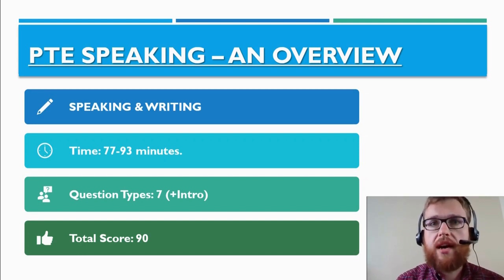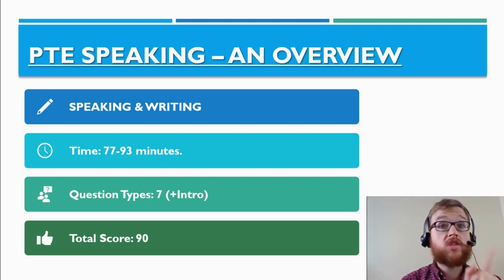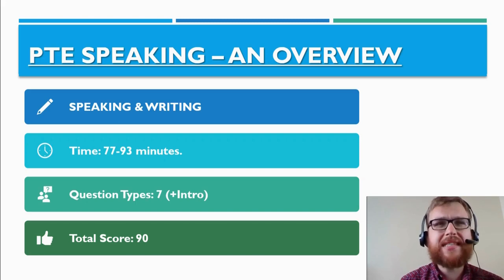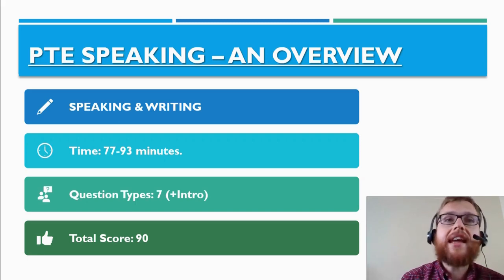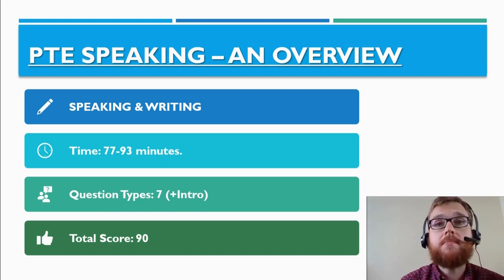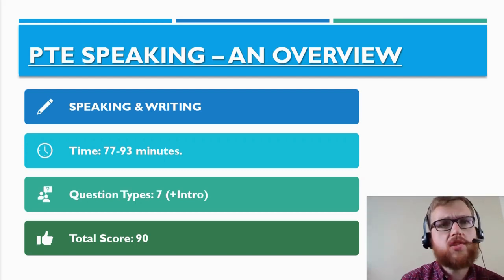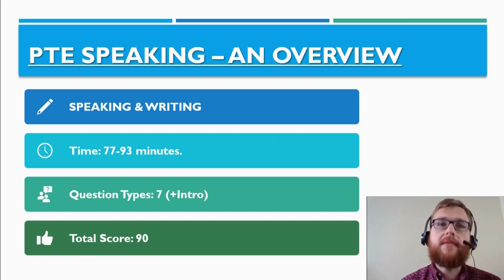How long will you have? Don't worry — it is not 77 to 93 minutes for the speaking test alone. That 77 to 93 minutes refers to the combined speaking and writing task, and the writing will actually take up the bulk of that time. How many questions do you have to do? You have to do seven types of questions plus a small intro.